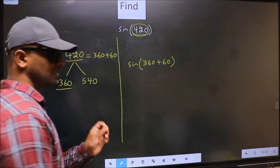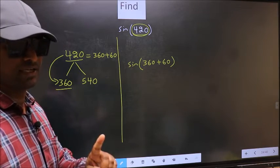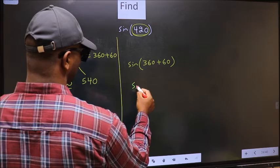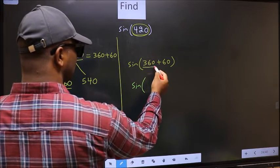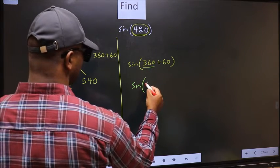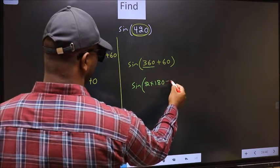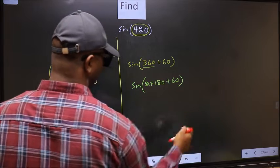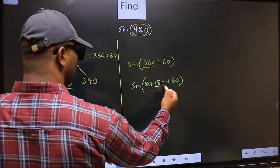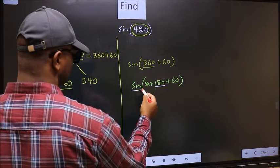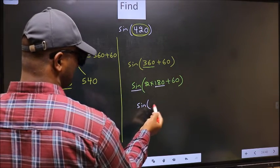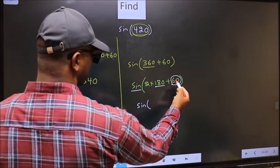This is your step 1. Next, sin. In place of 360, we should write 2 times 180 plus 60. Next. Here we have 180, so sin is not going to change. It will remain sin. And inside, we get this angle 60.